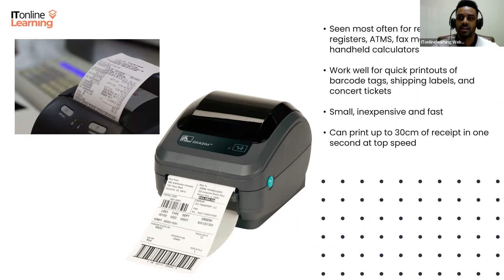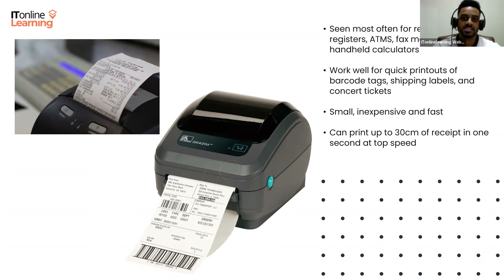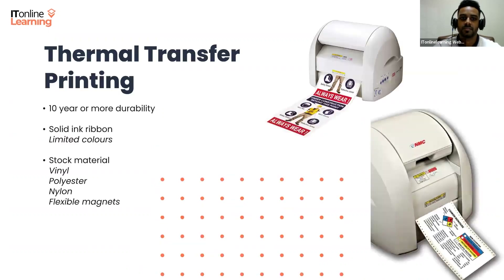Direct thermal printers also work well for quick printouts of barcode tags, shipping labels, and concert tickets. They're found all over the place since they're small, inexpensive, and fast. At top speeds, they can print up to 30 centimeters of a receipt in one second.